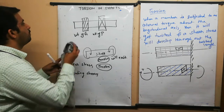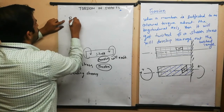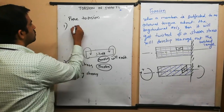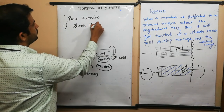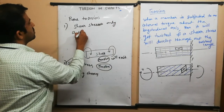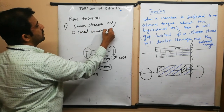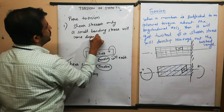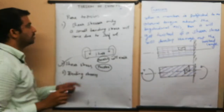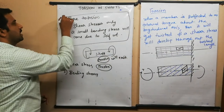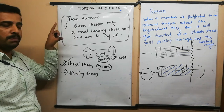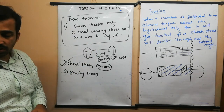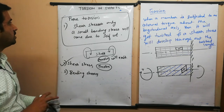In the state of pure torsion, only shear stresses exist. A small bending stress may also come due to the self-weight of the shaft itself. So pure torsion means the presence of shear stresses only, with a small amount of bending stress due to the self-weight of the member or shaft considered.